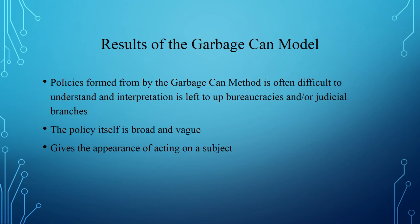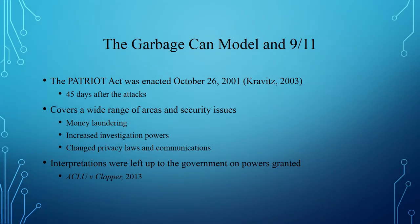Before iron triangles are discussed, it's important to look at how the garbage can model describes the government's response to the 9-11 attacks. The major policy response was the passing of the Patriot Act. It only took 45 days for this act to be written, passed, and enacted, and it covers a wide range of areas and security issues like money laundering, increased federal and state law enforcement investigation powers, and changes to privacy and communication laws. The act was very broad and vague in its wording, leaving the government to interpret its meaning, which caused many problems and court cases.